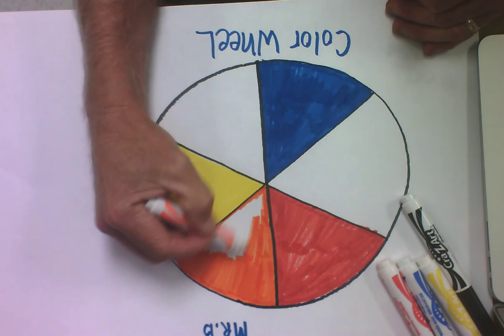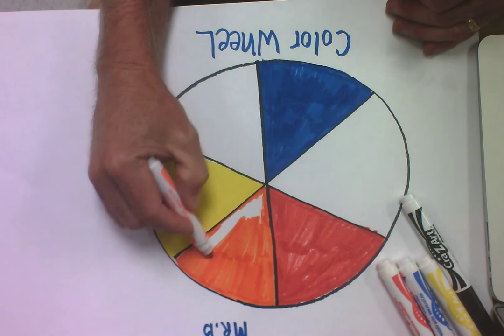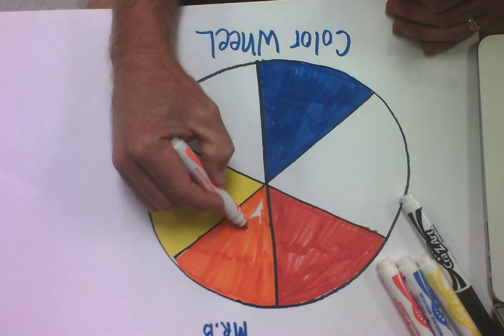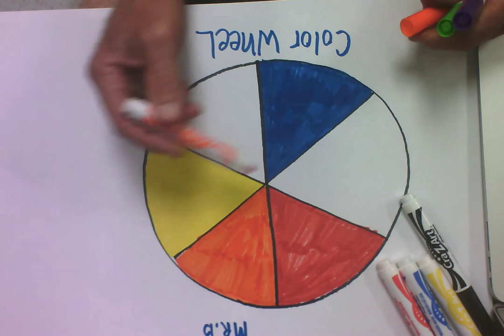So if you're using paint, you might want to use a little bit more yellow than you do red, because red is a little bit more dominant. So if it ends up becoming a real reddish orange, you might have to add a little bit more yellow. So there's my orange.